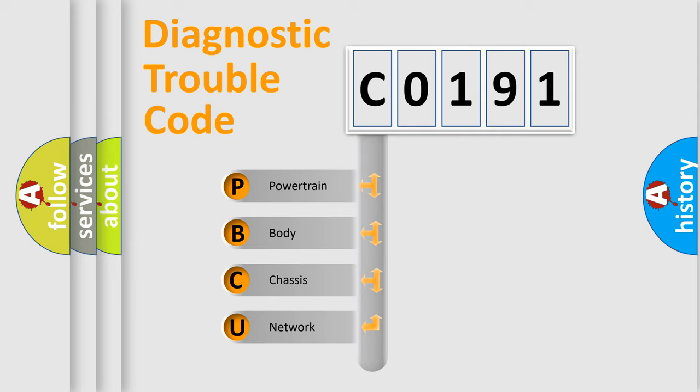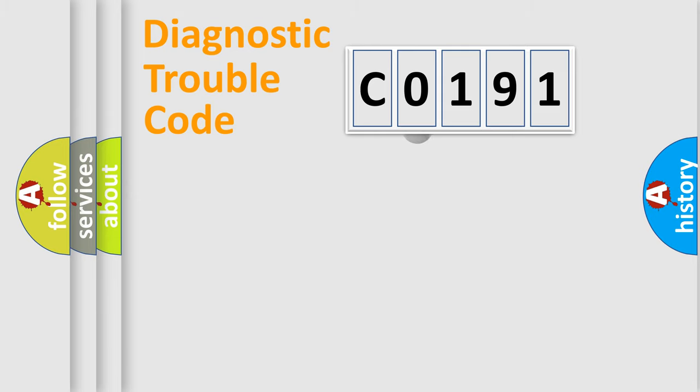We divide the electric system of automobile into four basic units: Powertrain, Body, Chassis, and Network. This distribution is defined in the first character code.